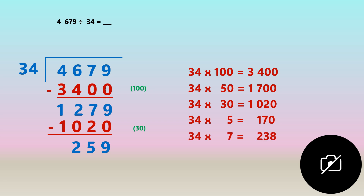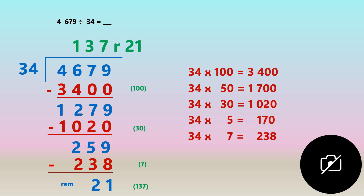Thirty four times seven is two hundred and thirty eight, and that's pretty close to two hundred and fifty nine. That goes seven times. We subtract and are left with a remainder of twenty one. Now all you have to do is add all the green numbers on the side: one hundred plus thirty plus seven, which gives an answer of one hundred and thirty seven. We write that in the quotient place on top — one hundred and thirty seven remainder twenty one.